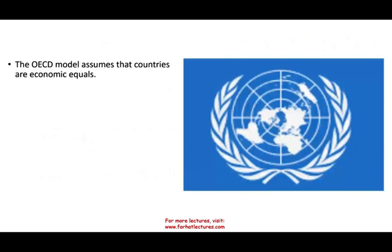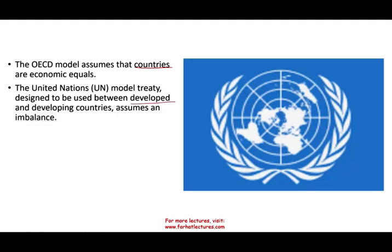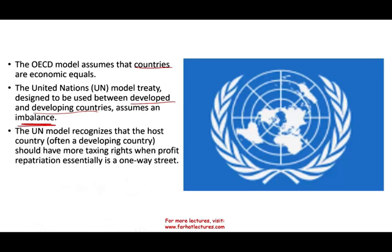Some countries follow the OECD model; we also have the UN model. The OECD model assumes that countries are economically equal because they're all developed countries. The UN model treats countries differently, recognizing developed and developing countries. The UN model recognizes that the host country — often a developing country — where you are running your business should have more taxing rights when profit is repatriated to the parent company. They try to give more power to developing countries so they can collect more taxes and develop themselves.